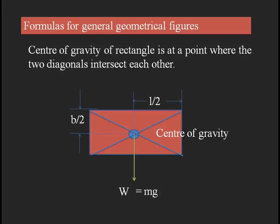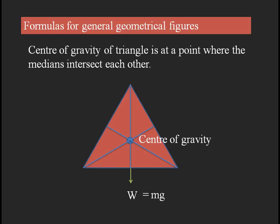Now, some formulas for general geometrical figures. For a rectangle, the center of gravity or centroid is at the point where the two diagonals intersect each other. It can be written as half of the length and half of the breadth — that is, at coordinates (L/2, B/2) — which gives you the center of gravity.